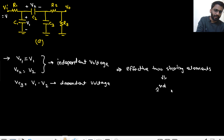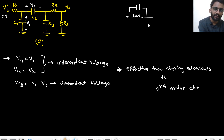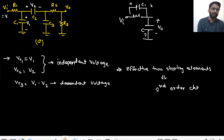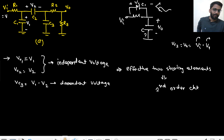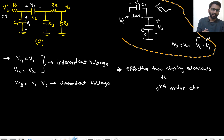Let's take another example. Consider a simple circuit where you apply VIN and the output is V0, with capacitors C1 and C2. If you give V1 voltage to capacitor C1, what will VC2 or V0 be? That would be VIN minus V1. Both VIN and V1 are independent, so you only had to give one independent voltage, V1. That means this is a first-order circuit. You only had to give one independent voltage to a storing element and could express the other capacitor voltage in terms of it.